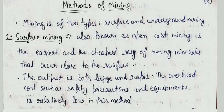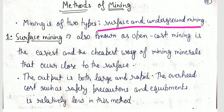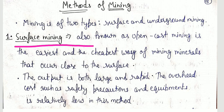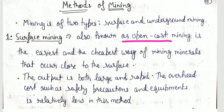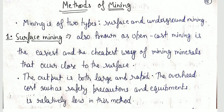There are two methods of mining. First is surface mining, also known as open-cast mining — the easiest and cheapest way of mining minerals that occur close to the surface. The output is both large and rapid. The overhead cost for safety precautions and equipment is relatively low in this method.